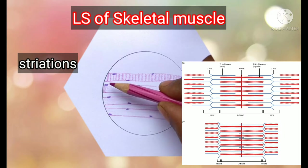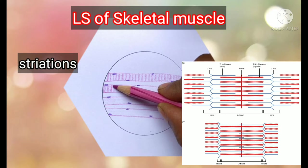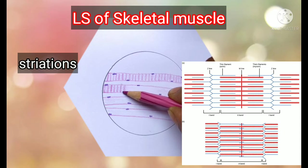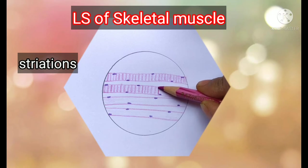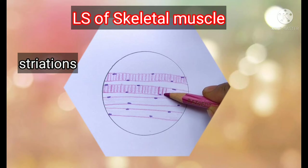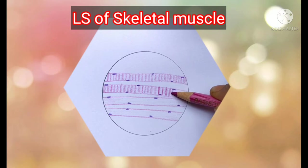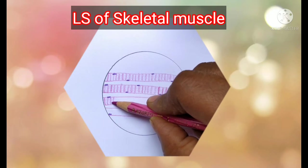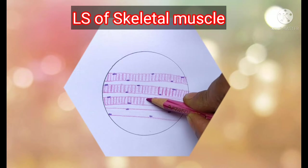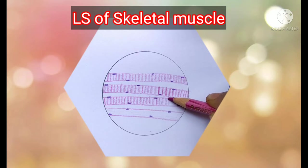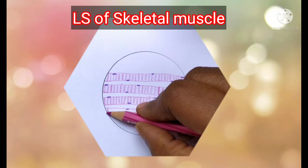The striations represent the sarcomere unit in the muscle fibrils. The sarcomere is the area between two Z lines. It has a dark band occupying the majority of the space and a light band. Part of the light band of one sarcomere and the adjacent sarcomere together form the full light band. When drawing, make sure the dark and light bands are of almost equal width.